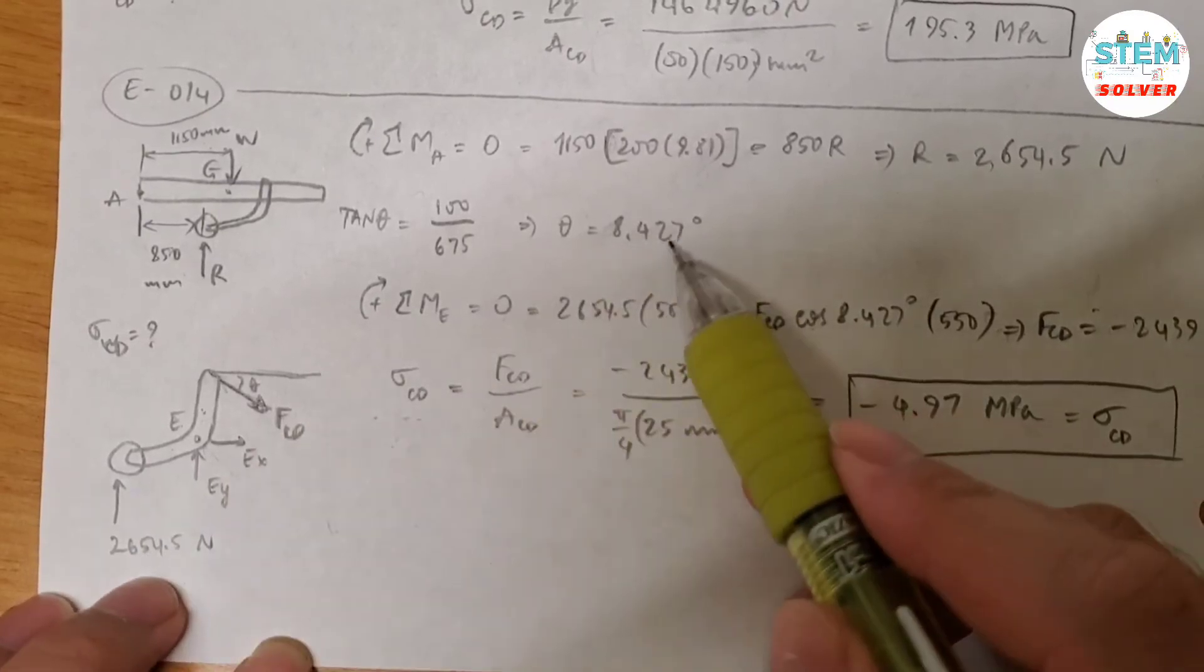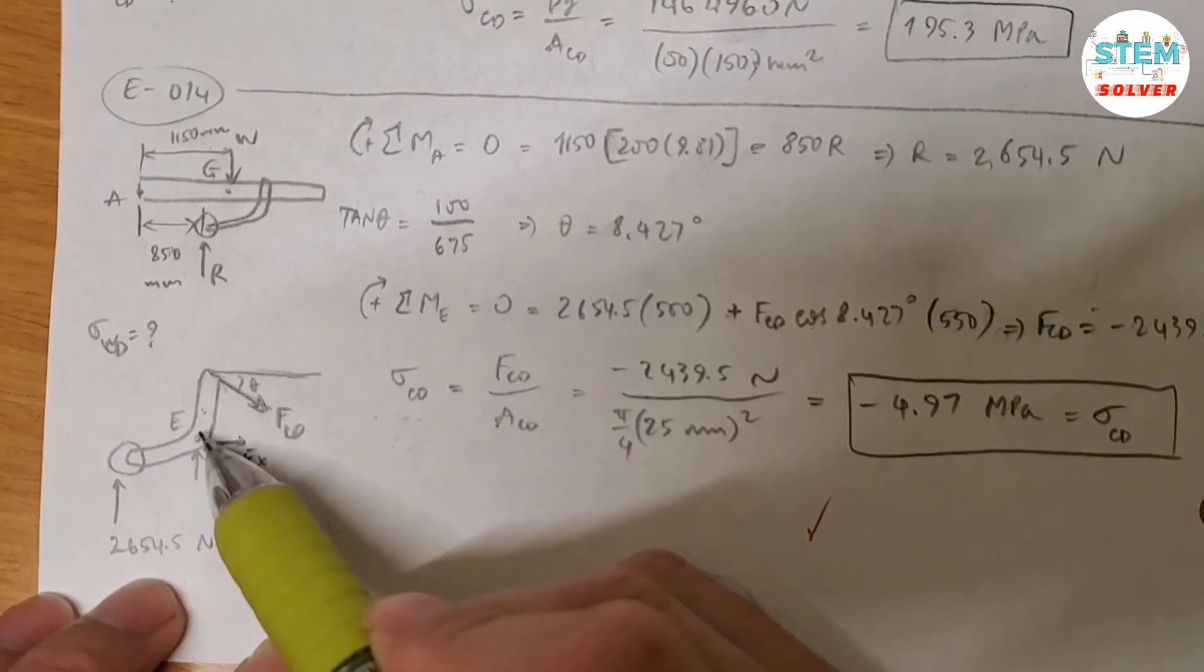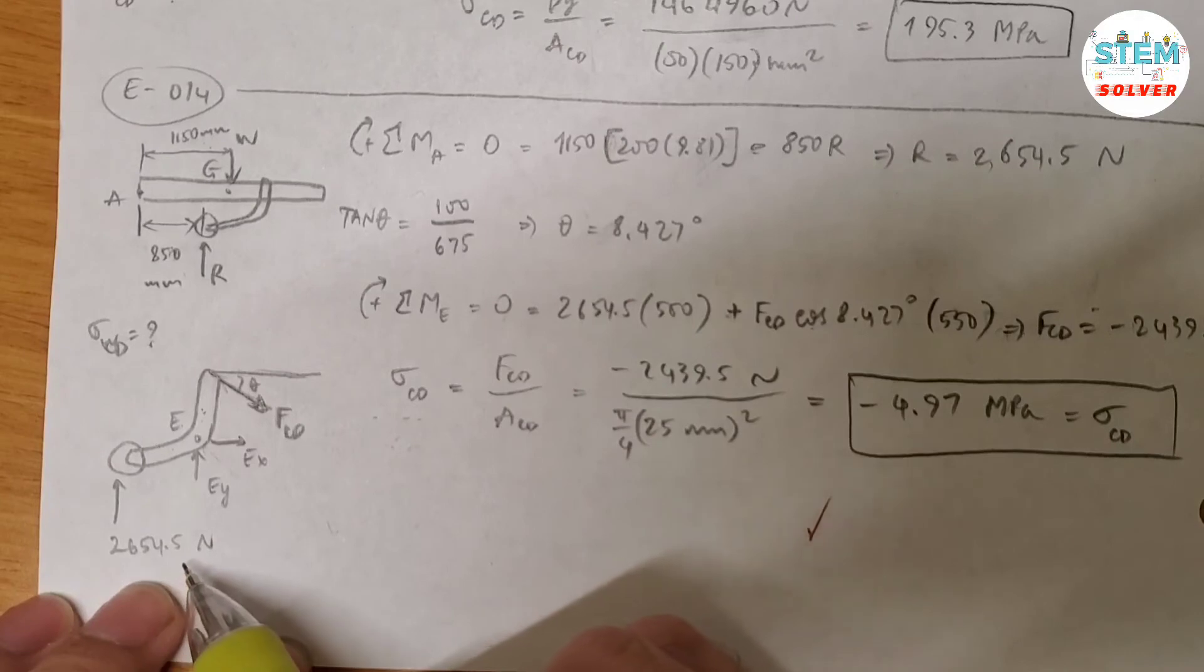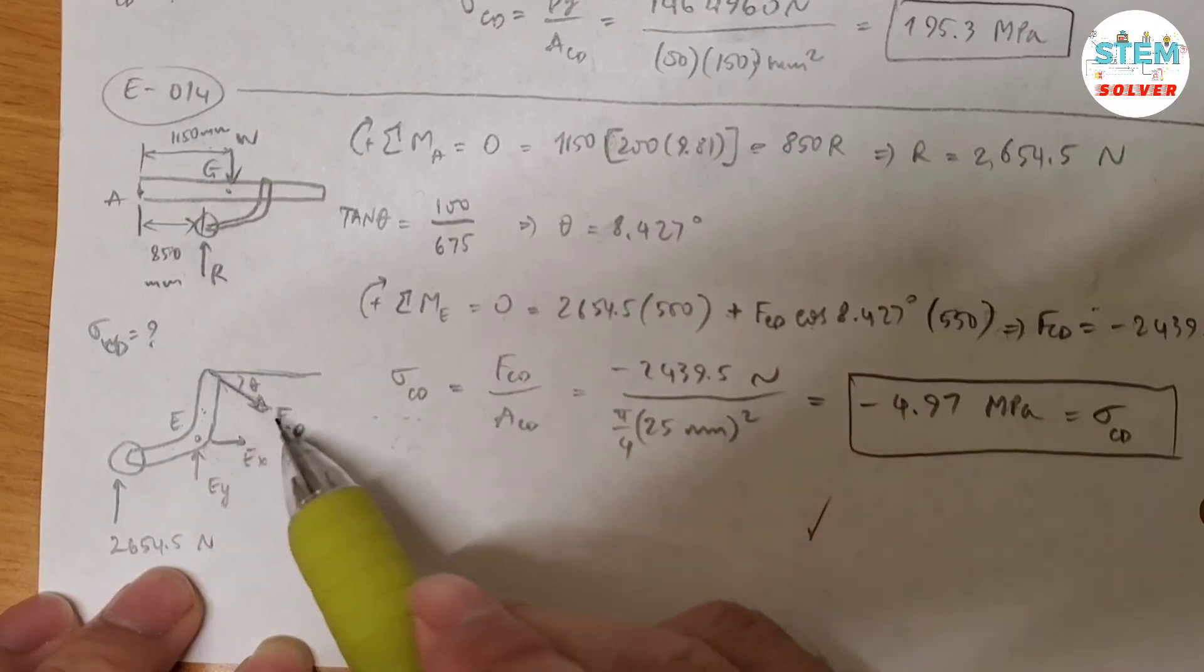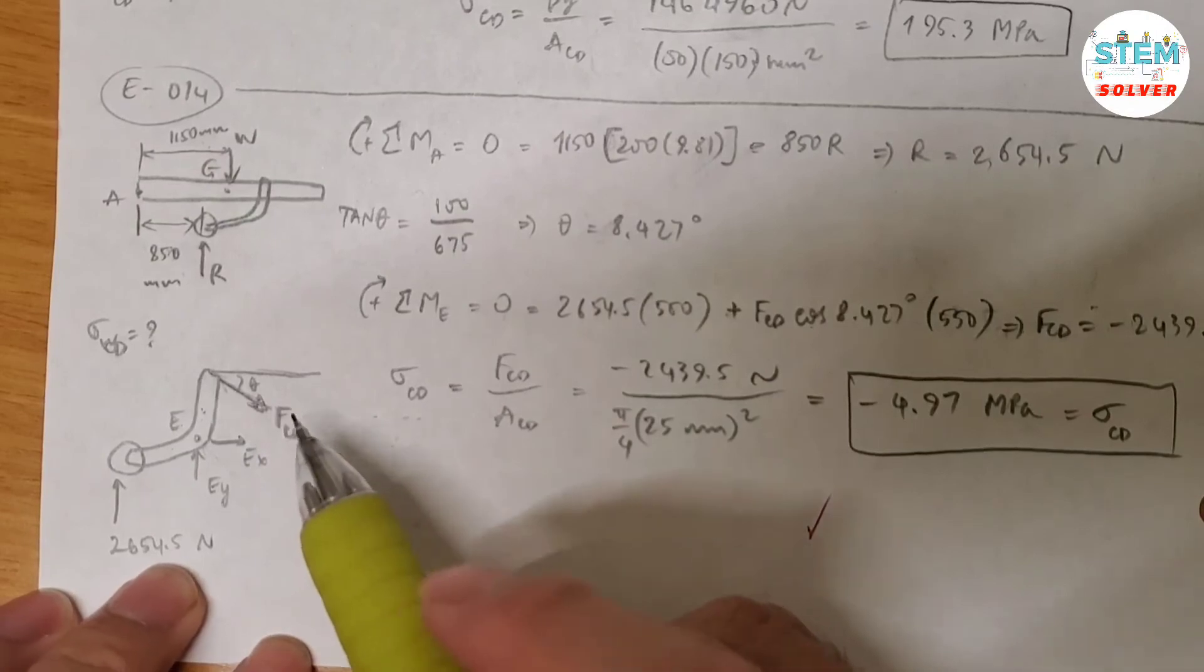Now take a moment about E and assume clockwise direction is positive. Set this moment is equal to this force, which is what we just found up here. And this is clockwise with respect to E. So I have positive 2654.5 times the distance from here to here is 500 mm. Now for this force, FCD. Let me slow down here.